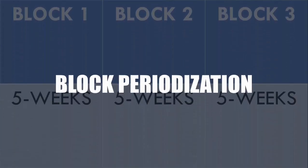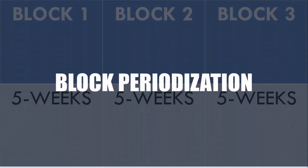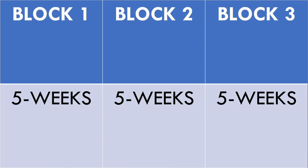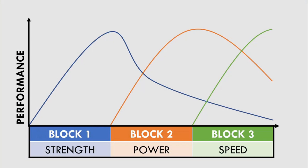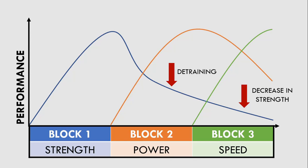With these principles in mind, let's have a look at why the classic block periodization model may have some issues. Block periodization generally trains qualities separately in individual blocks in a sequence. For example, a five-week block of strength training may be followed by a block of power training, followed by speed training. The issue is that according to the principle of detraining, by the time the athlete has improved in one quality they will have detrained in the previous quality.